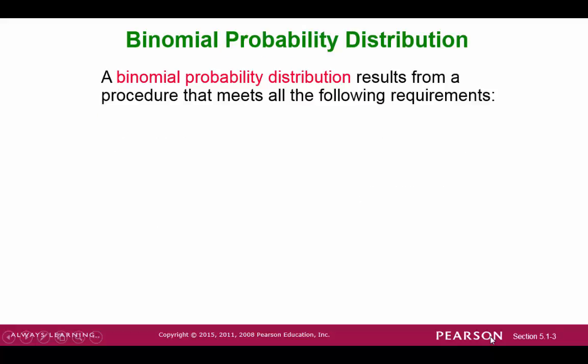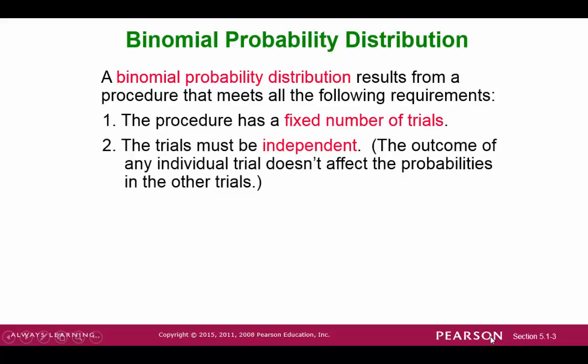The binomial probability distribution has four main criteria. First, the procedure must have a fixed number of trials. Second, each trial must be independent.